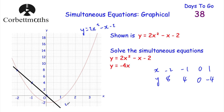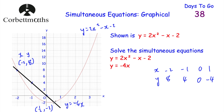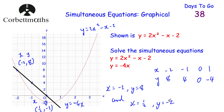We've drawn the graph and there are two points of intersection. The first is the point (negative 2, 8), so x equals negative 2 and y equals 8. The second point, looking carefully, has coordinates (one half, negative 2), so x equals one half and y equals negative 2. Our two solutions are: x equals negative 2, y equals 8, and x equals one half, y equals negative 2. Well done if you got those.